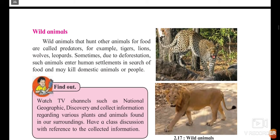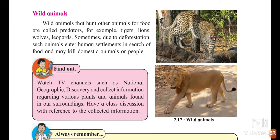Now we will see about wild animals. The wild animals that hunt other animals for food are called predators — for example, tigers, lions, wolves, and leopards. Sometimes, due to deforestation, we cut down trees for our needs because of increasing population, and these animals' habitat is destroyed. So they enter human settlements and may kill domestic animals present at your house.